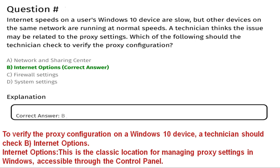Question one: Internet speeds on a user's Windows 10 device are slow, but other devices on the same network are running at normal speeds. A technician thinks the issue may be related to the proxy settings. Which of the following should the technician check to verify the proxy configuration? Option A is Network and Sharing Center, Option B is Internet Options, Option C is Firewall Settings, Option D is System Settings.